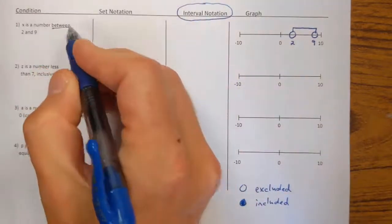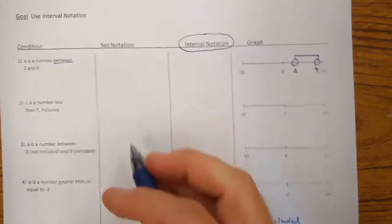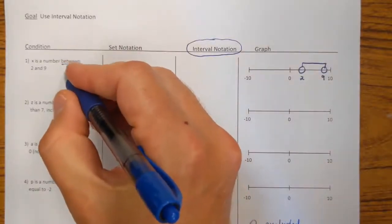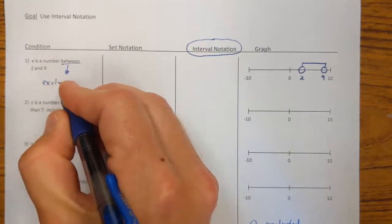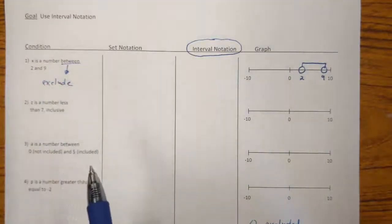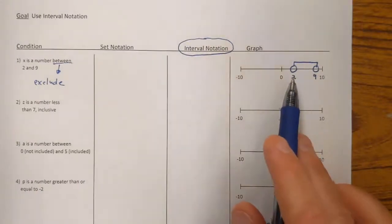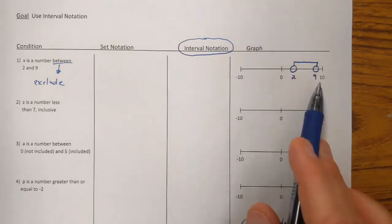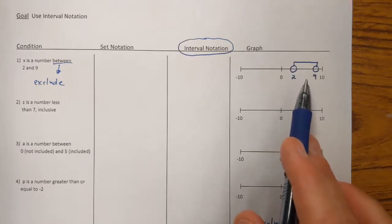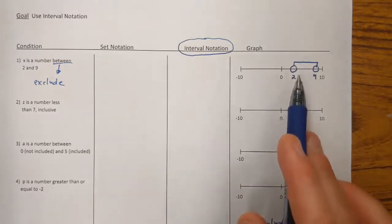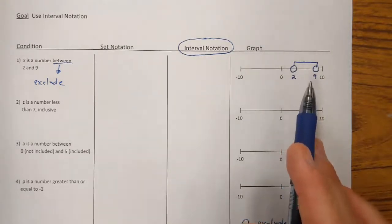Let's talk about the word 'between' for a second. The word between can depend on context, but in a mathematical setting, when you see 'between,' that means you are supposed to exclude the endpoints — the 2 and the 9 are not included in this condition. Everything else between is included: the 3, 4, 5, 6, 7, 8, as well as all the decimals in between, like 2.1, 2.2, 2.3.